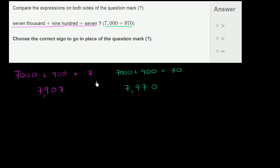So if we compare place value by place value, we have 7,000 in either case. So the thousands place is the same. We have the same number of hundreds. We have nine hundreds. But here we have no tens and we have a 7. And here we have no ones and we have 70. And clearly, 70 is greater than 7.